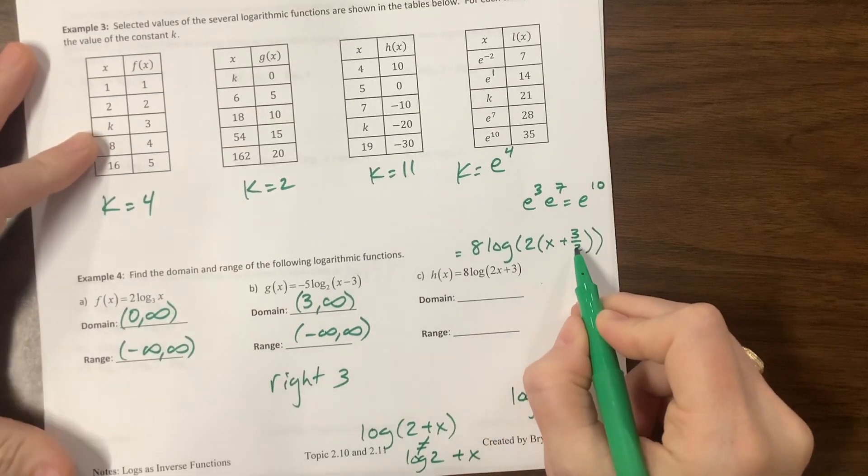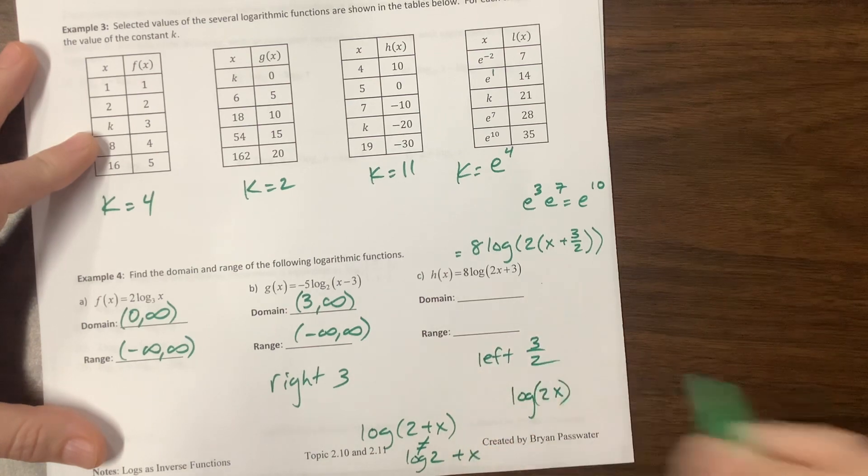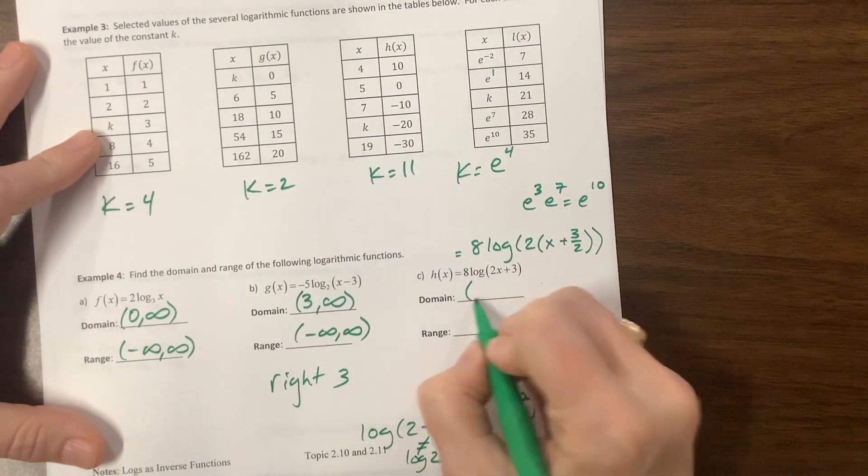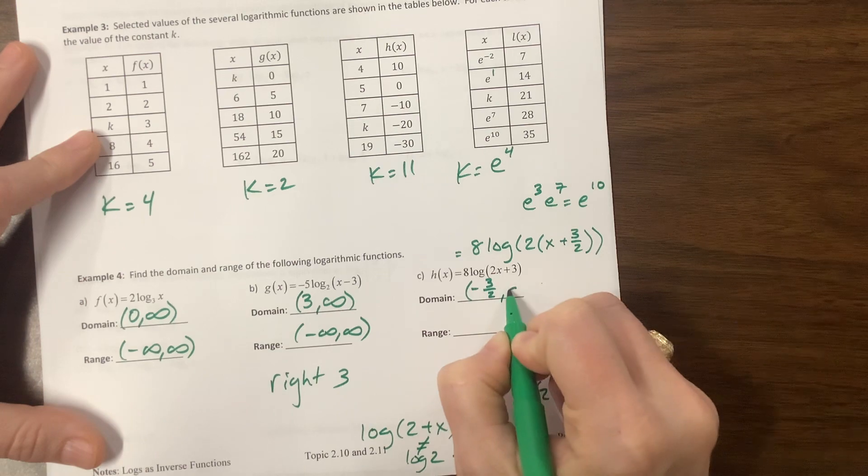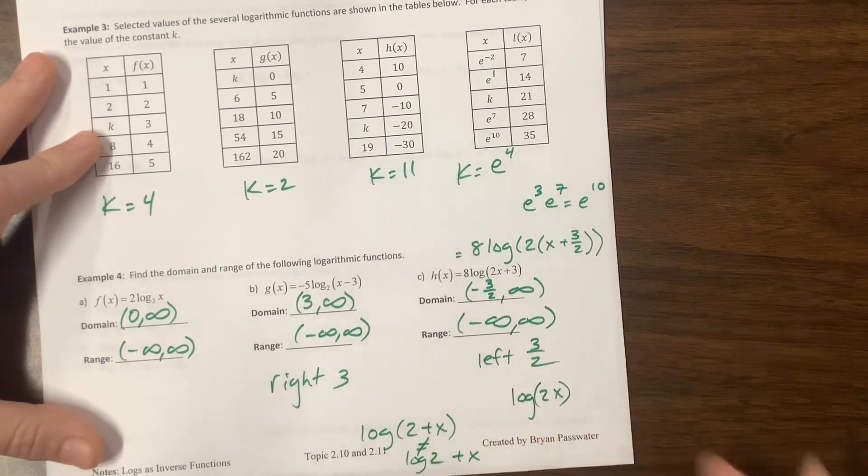Okay. So back up here, this is going to move it to the left three halves. So left three halves. That means our domain goes from negative three halves to infinity. And our range is still negative infinity to positive infinity.